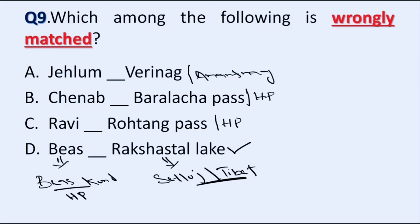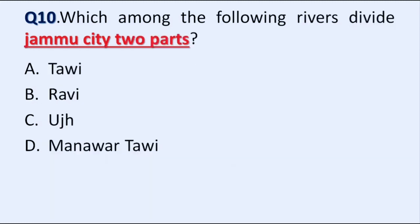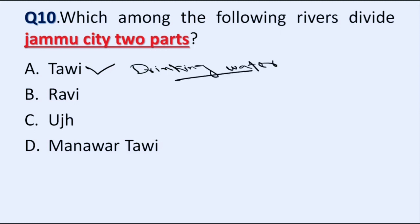Our next question is: which among the following rivers divides Jammu City into two parts? Option A: Tawi, B: Ravi, C: Aj, D: Munawar Tawi. Correct answer is Option A, River Tawi. River Tawi divides Jammu City into two parts and also provides drinking water to Jammu City.